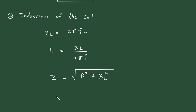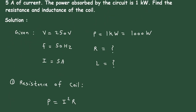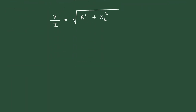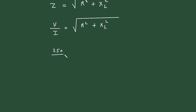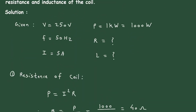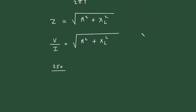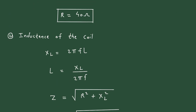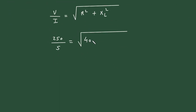Now Z is equal to V divided by I, so we can write V by I is equal to the square root of R squared plus XL squared. Voltage V is 250V divided by current I of 5 amperes, giving Z equal to 50. So 50 is equal to the square root of 40 squared plus XL squared, where the value of resistance is 40 Ohm.